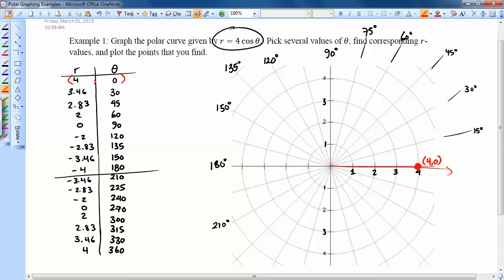At 30 degrees, I have a radius of 3.46. So at 30 degrees, I'm gonna count out 1, 2, 3, 3.46, right about here. So now this point, 3.46, 30 is also gonna be on this curve.